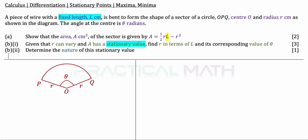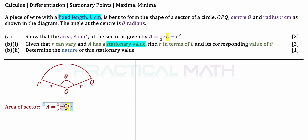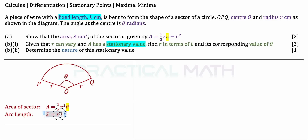Let us begin this question. First, the question wants us to find the area of the sector, so let us revise the area of sector formula. The area of sector is A equals half R² theta, where R is the radius and theta is the angle. We also need the arc length formula: S equals R theta, where S is the arc length, R is the radius, and theta is the angle. With these two formulas we can start the question.